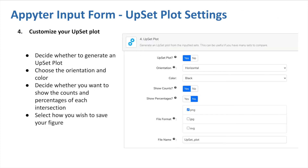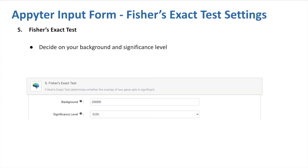Similarly, the user can choose whether they want an upset plot, and if they do, they can customize the orientation and color of the figure, decide whether they want the cardinalities or percentages to appear in the figure, and choose how to save their figure. Finally, the user adds information needed to compute Fisher's Exact Test. This includes the number of background genes and their desired significance level. For humans, we typically use a background of 20,000 genes, which is the default in the Aperture.